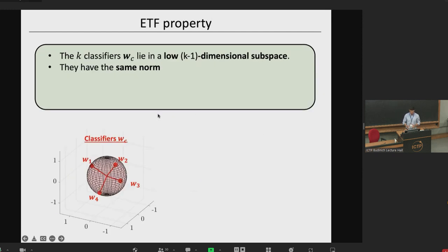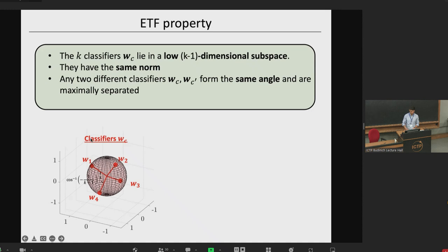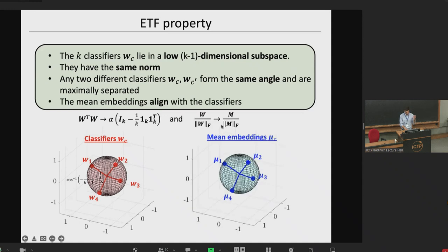The ETF property is much stronger — it says something specific about the geometry of the learned classifiers. The first sub-property is that these classifiers lie in a K-minus-one dimensional subspace. For four-class classification, I have four classifiers: they all have the same norm, lie on the same sphere, and are maximally separated — the cosine of their angle is minus one over K minus one. In matrix form, W-transpose W converges to a scaling of identity minus a rank-one component. The embeddings will converge to the same geometry and align with the classifiers.